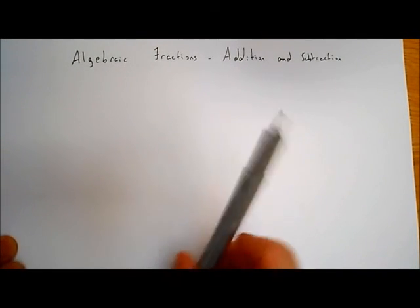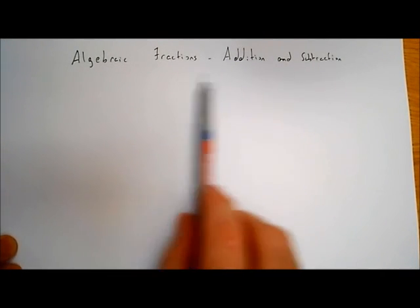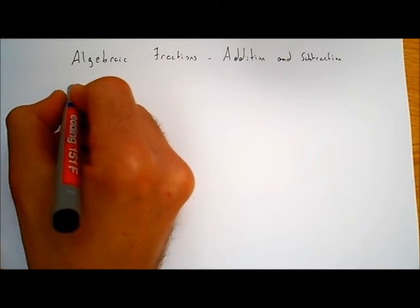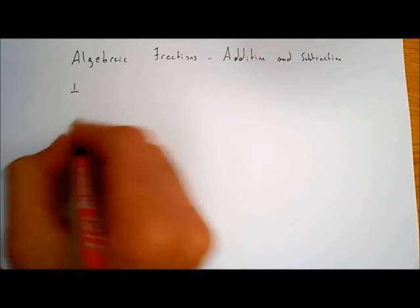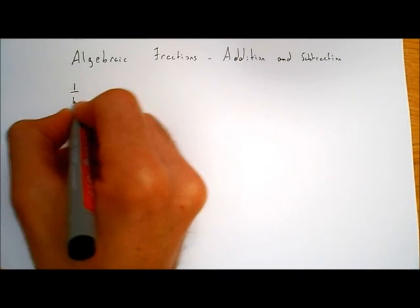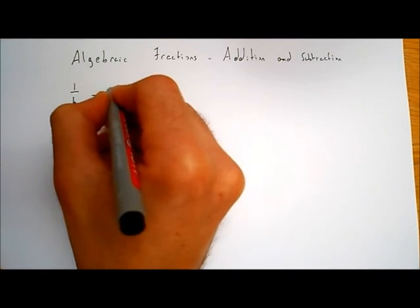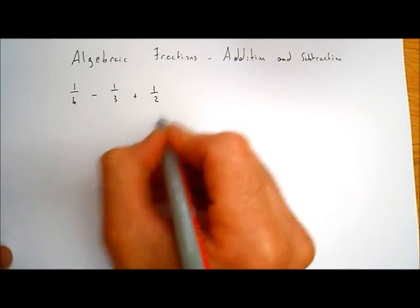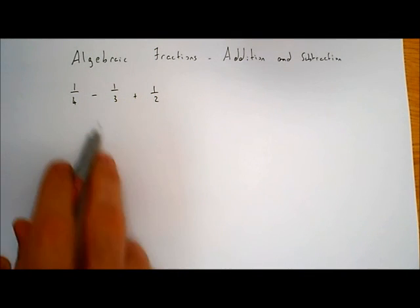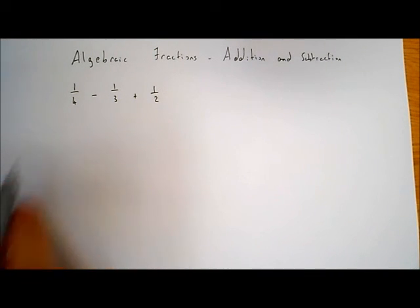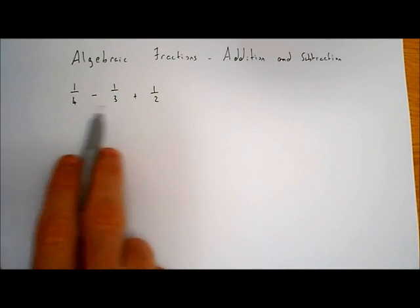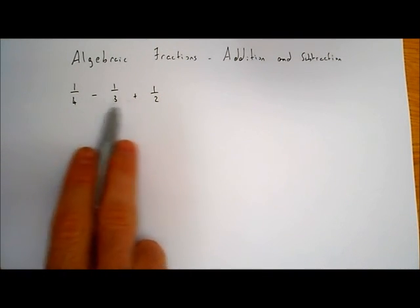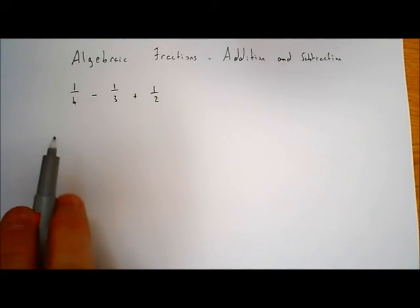We're going to have a look at algebraic fractions — adding and subtracting algebraic fractions. But before we do, let's have a look at just a simple ordinary fraction where we've got numbers. So 1 over 4 minus 1 over 3 plus 1 over 2. We want to subtract and add, but we can't because the denominator is different in each of them. We've got a 4, a 3, and a 2.